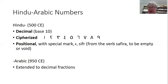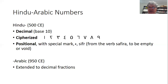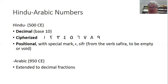The Gauls in France used a base 20 system, and there's a remnant of that in French numbers — for example, 'quatre-vingts' for 80 in French, which is four times 20. Cipherized means they have a symbol or cipher for the digits one through nine to represent those numbers, and you can see them there. Over hundreds of years and lots of variation, they eventually turned into the numbers we know and use today.